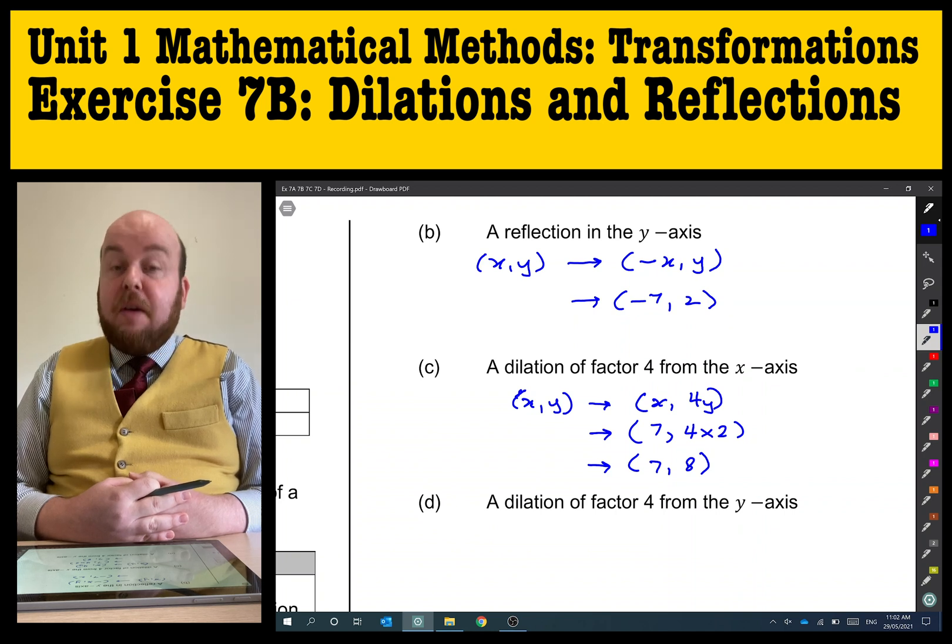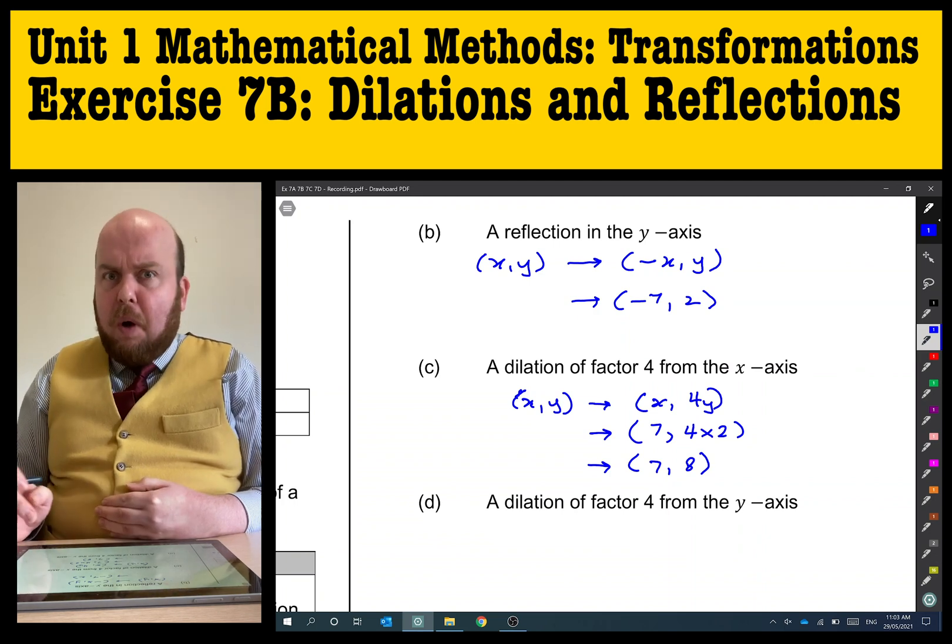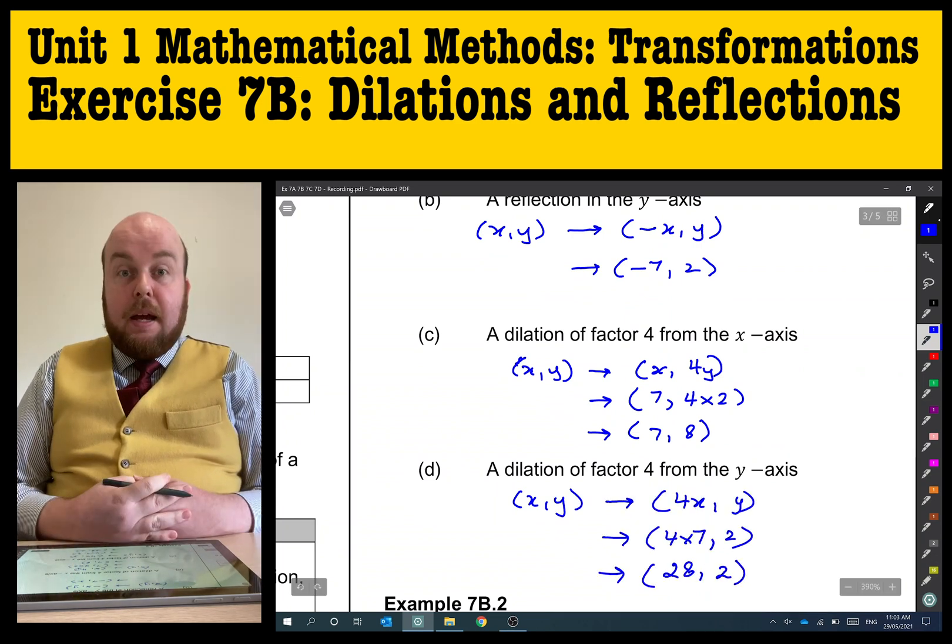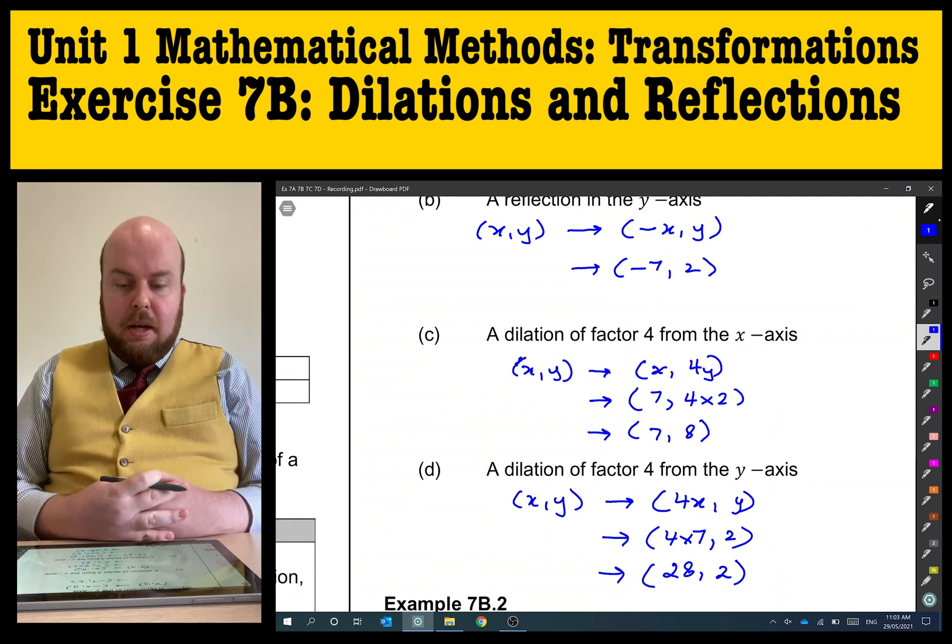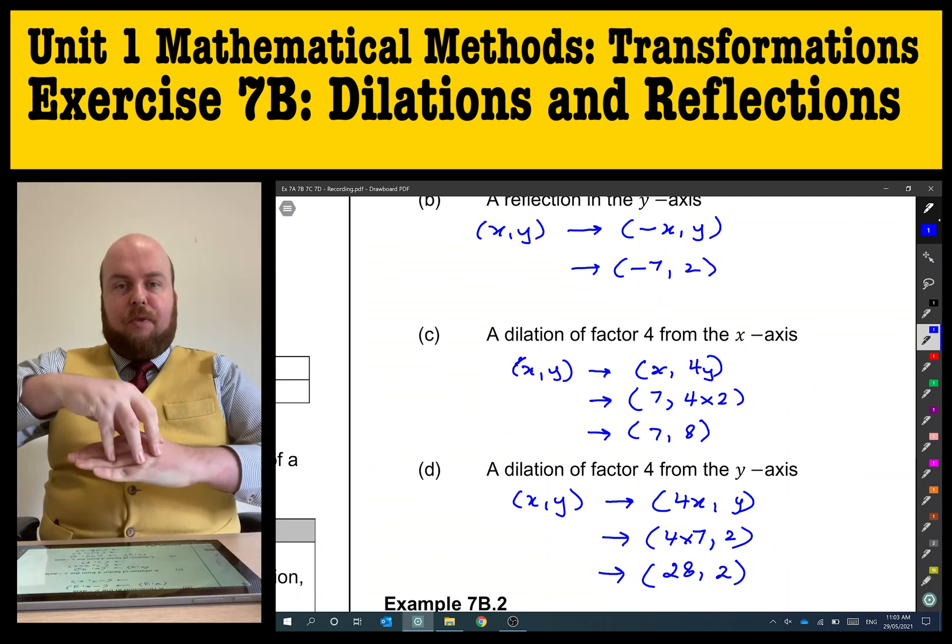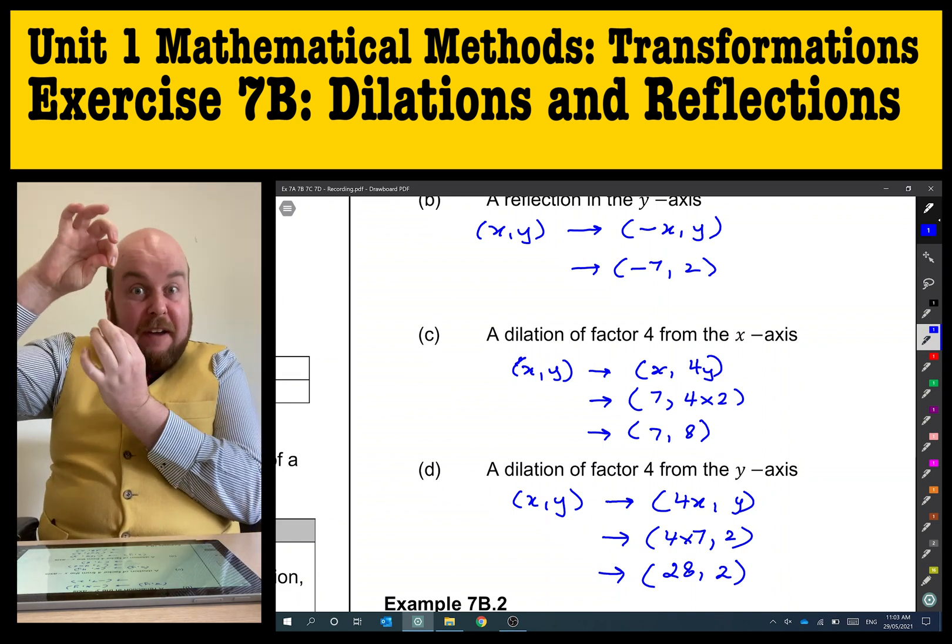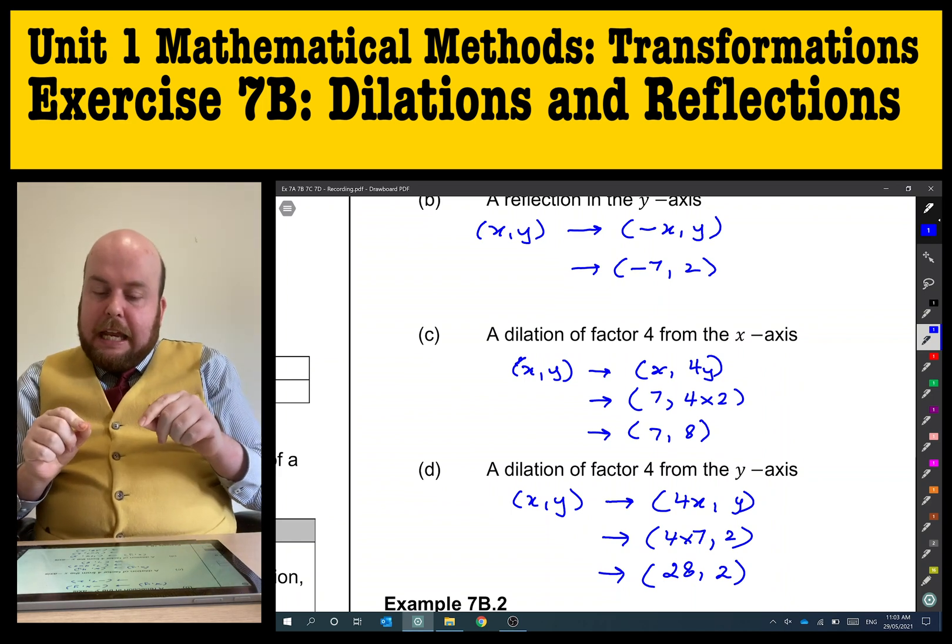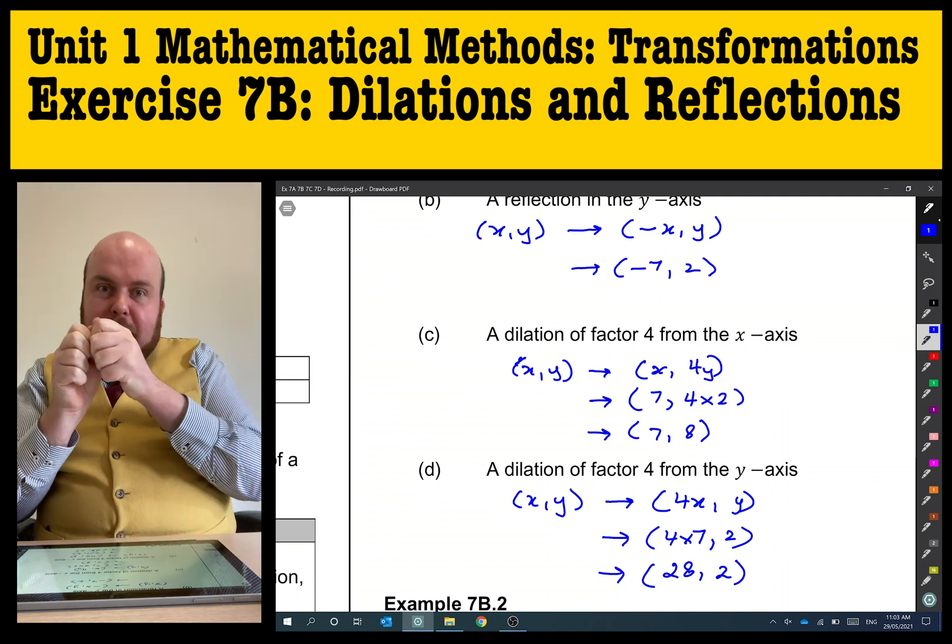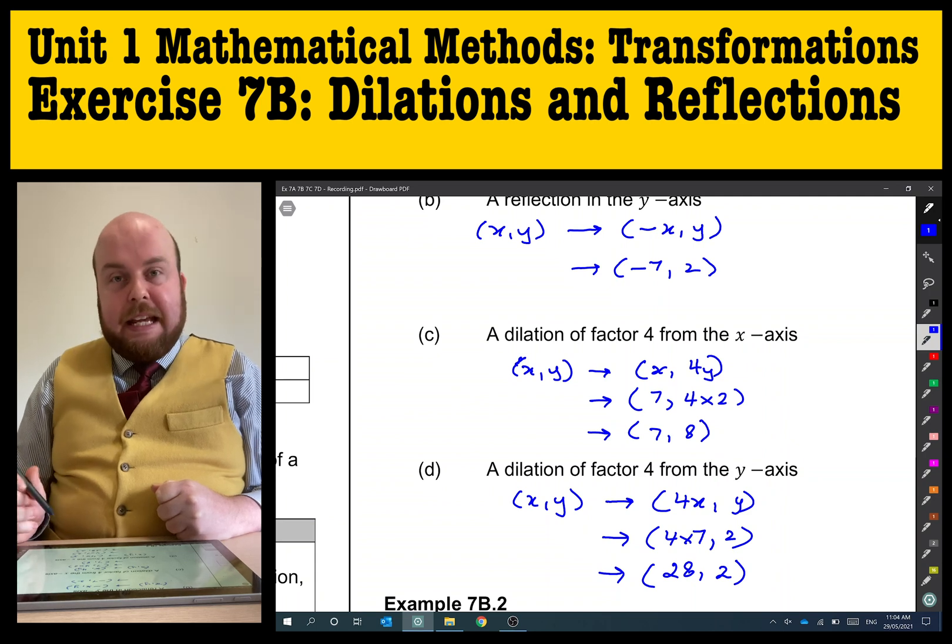A dilation of factor 4 from the y-axis. Well, this will mean I'm putting a 4 next to the x rather than next to the y. And so my new coordinates will be (28,2). Our dilation from a factor of 4 from the x-axis is from, so I'm taking the original point (7,2), taking that 2 and stretching it up by 4 times the amount. Whereas if I'm dilating by a factor of 4 from the y-axis, I'm stretching up this way. The 7, I'm stretching it all the way up, 4 times what it was originally, all the way up to (28,2).